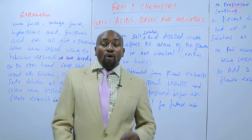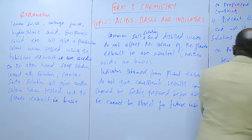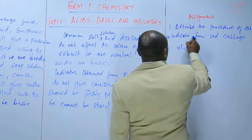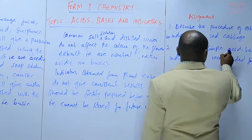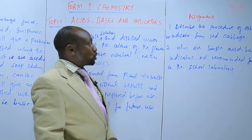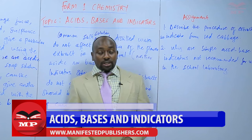That is why there is need for what we call commercial indicators, and that's what we shall discuss in our next lesson. Our assignment for today: number one, describe the procedure of extracting an indicator from red cabbage. Number two, why are simple acid-base indicators not recommended for use in the school laboratory? Until next time, goodbye.